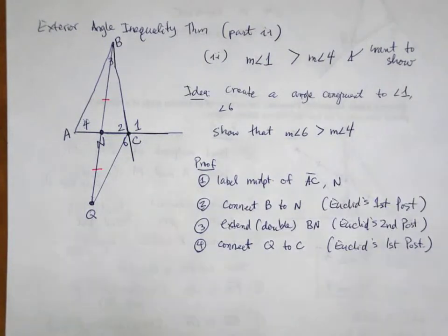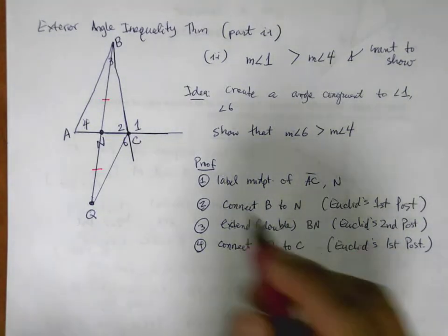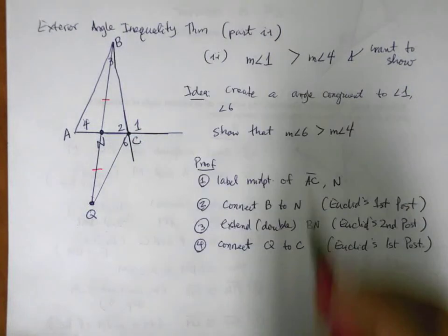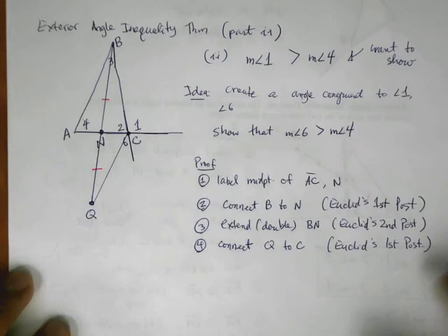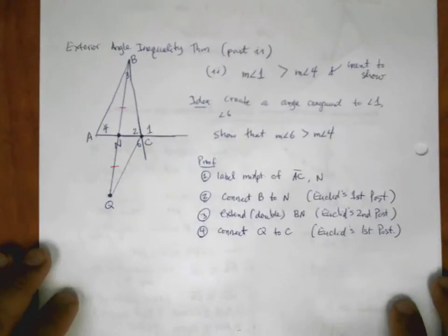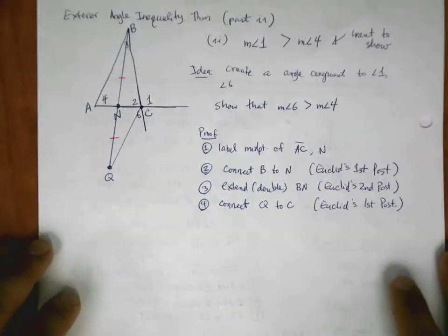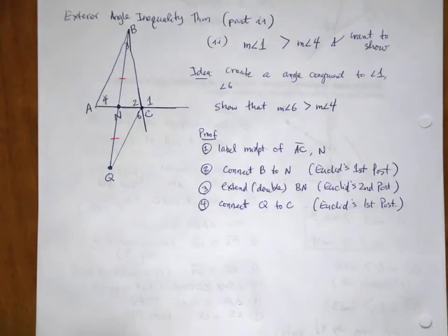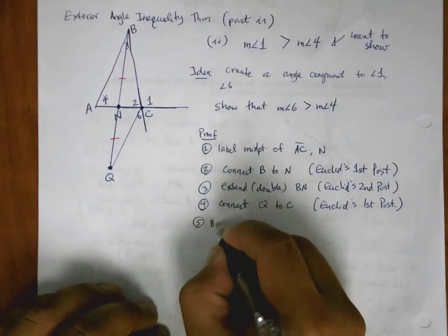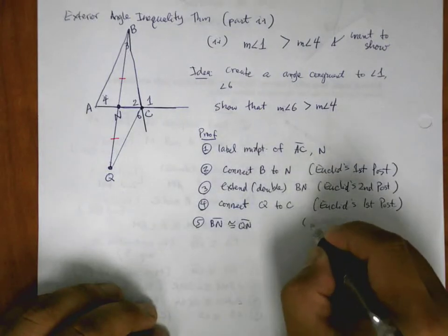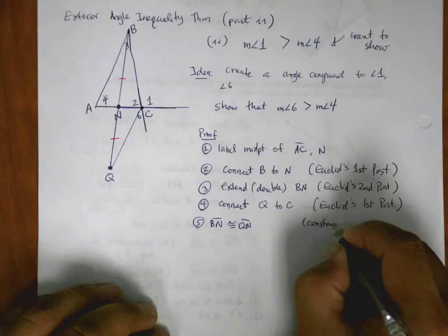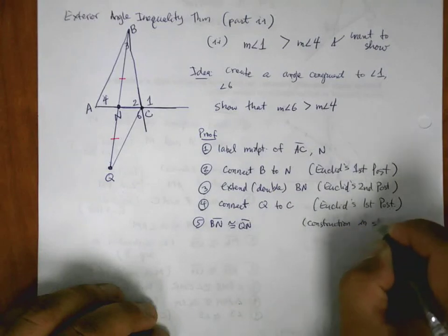And then connect Q to C. And again, this is Euclid's first. Well, let's see where we're at now. We're in a similar situation that we had before. BN and QN are congruent because we made them that way. So I can say that BN is congruent to QN because of the construction in step three.